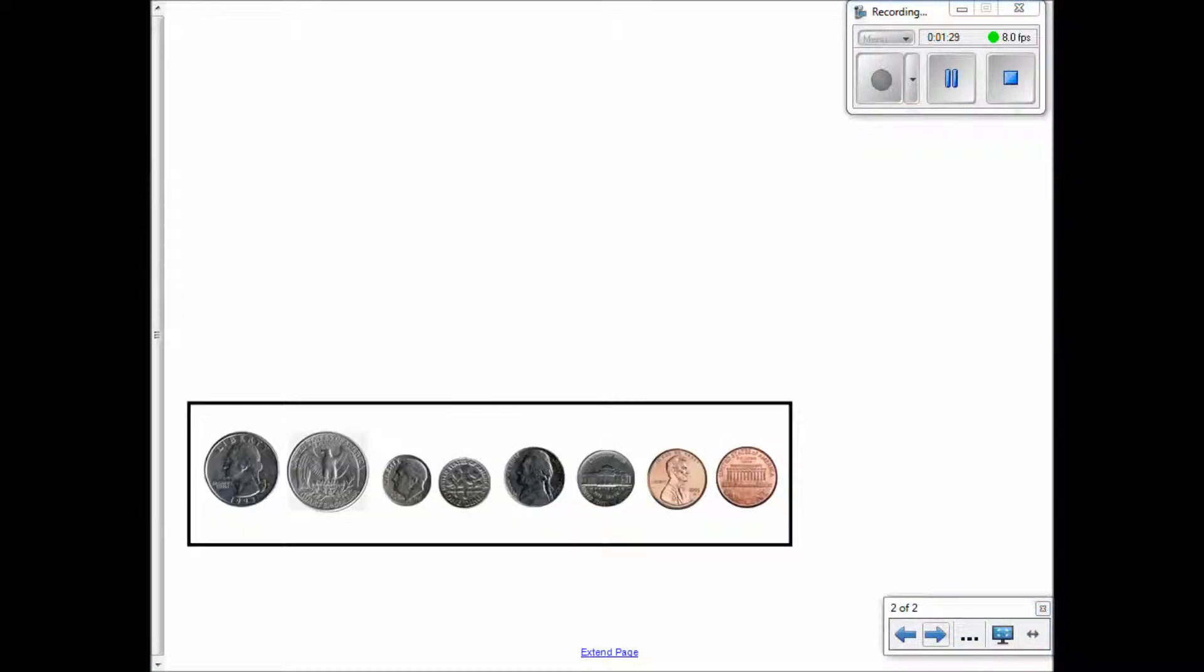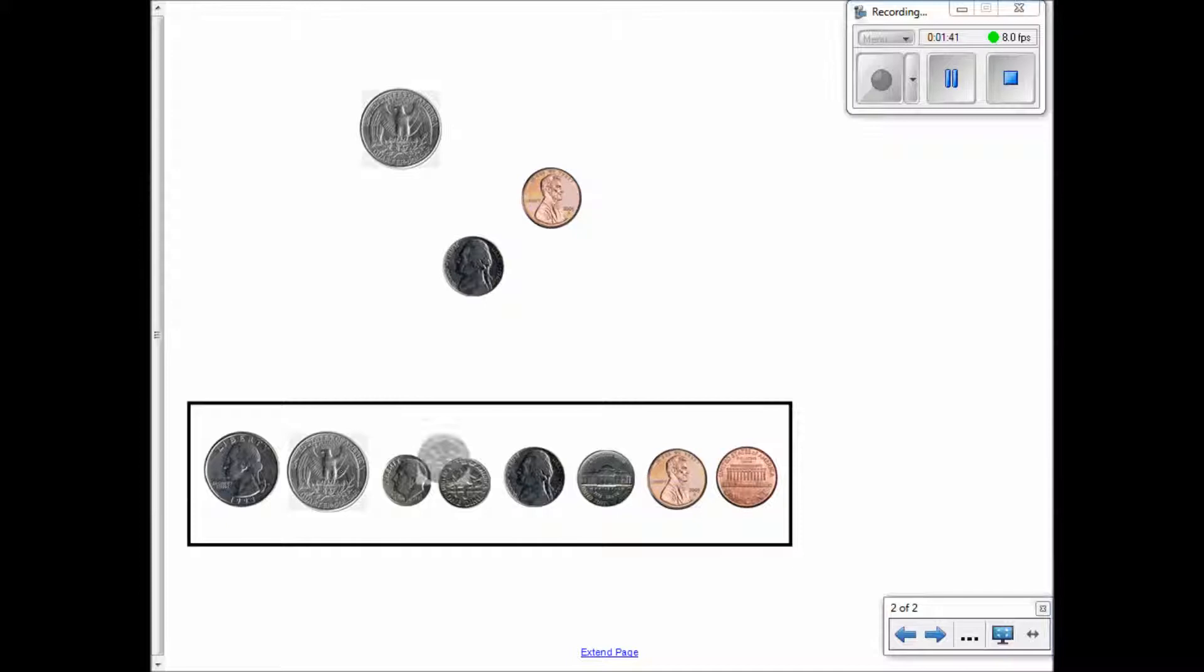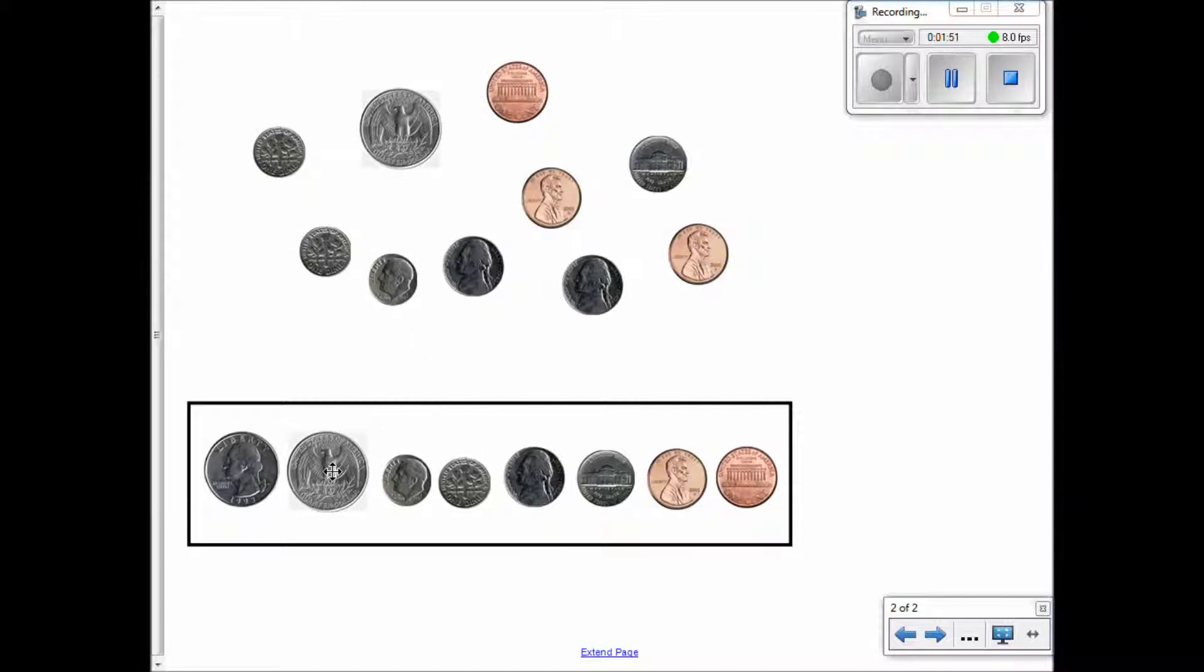We're going to pretend that Dad said, 'Here you go, here's my change out of my pocket.' These coins fall out onto the table, and he says, 'If you can count these coins, then you can have them.' Well, that's a good deal, right? I want to count those coins because I'd like to have them.